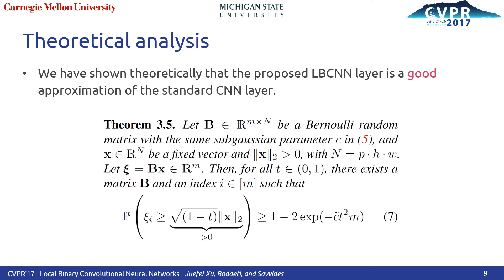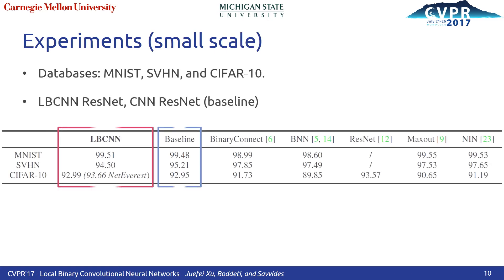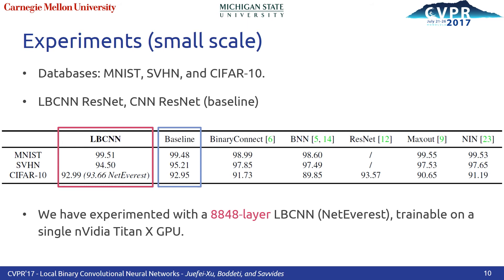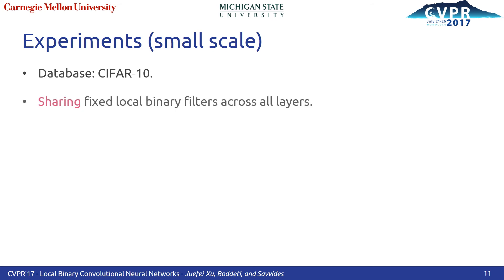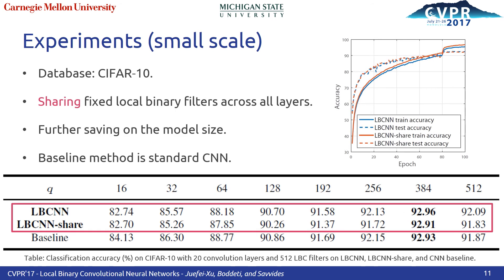The small-scale experiments are carried out on MNIST, SVHN, and CIFAR-10. The performance of ResNet with LBC layers is on par with the state-of-the-art. Moreover, with significant parameter savings, we are able to train LBCNN with over 8,000 layers on a single Titan X. If we share the same dictionary of LBC filters across all layers, we can have further savings in model size by a factor of D, where D is the depth of the network.